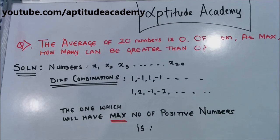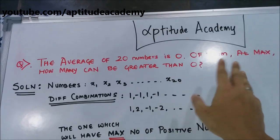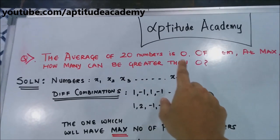Hi, I'm Daniel Sousa and welcome to Aptitude Academy. Today's problem is the average of 20 numbers is 0. Of them at max, how many can be greater than 0?